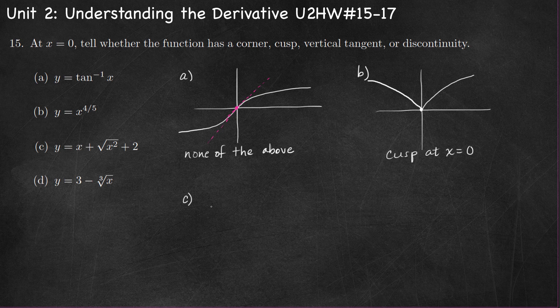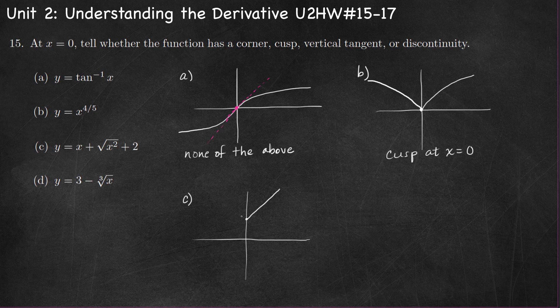Part C, y equals x plus the square root of x squared plus two. At x equals zero, the function is equal to two. When x is positive, this is equal to two x plus two, so it looks something like that, probably a little bit steeper. When x is negative, it's just equal to two. At x equals zero, the graph is continuous — there is a point here, f of zero equals two, and the limit as we approach from the left and the right is also two.